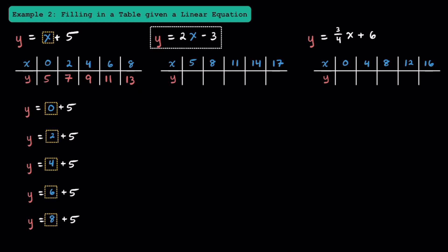Now let's look at this linear equation where we have y is equal to 2x minus 3. We're going to take each of these x values and substitute it in for x to solve for y. Substituting in 5 for x, we have 2 times 5 minus 3. Following the order of operations, 2 times 5 is 10, and 10 minus 3 equals 7. Now with x equal to 8, we get y is equal to 2 times 8 minus 3. 2 times 8 is 16, and 16 minus 3 equals 13.